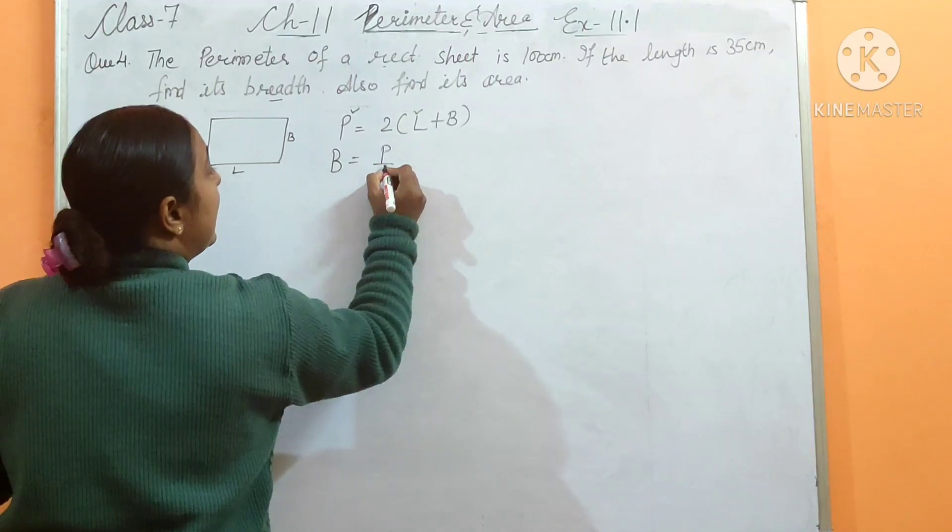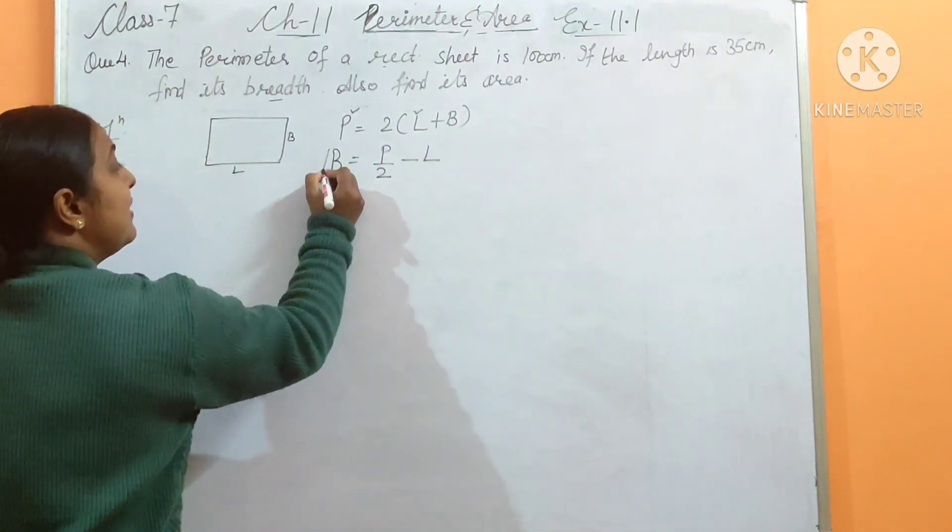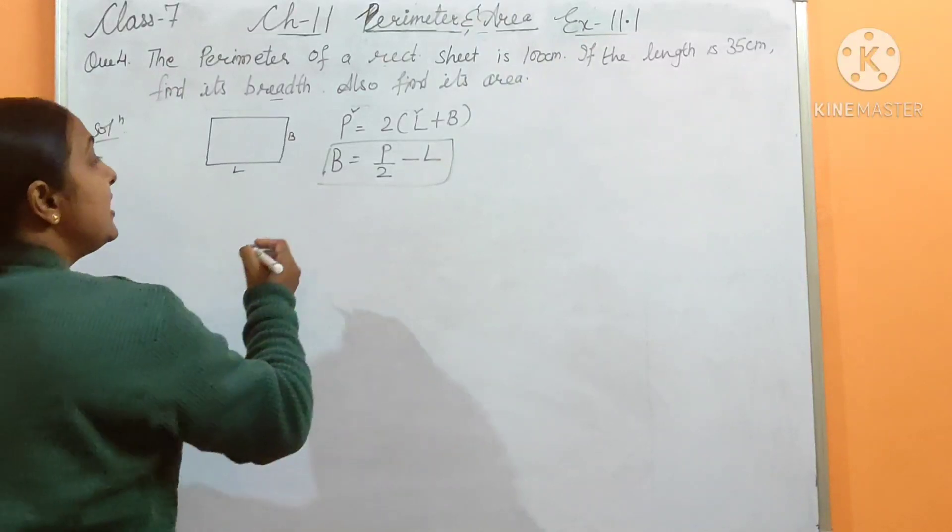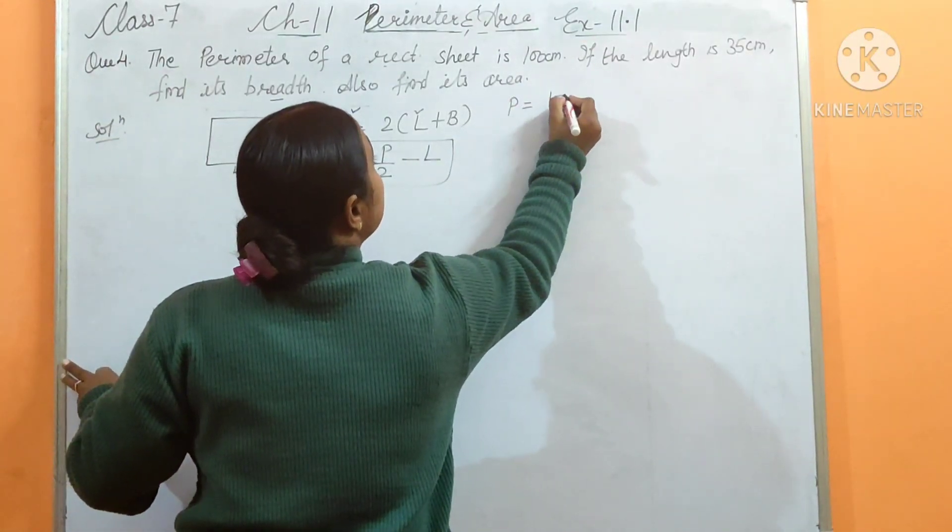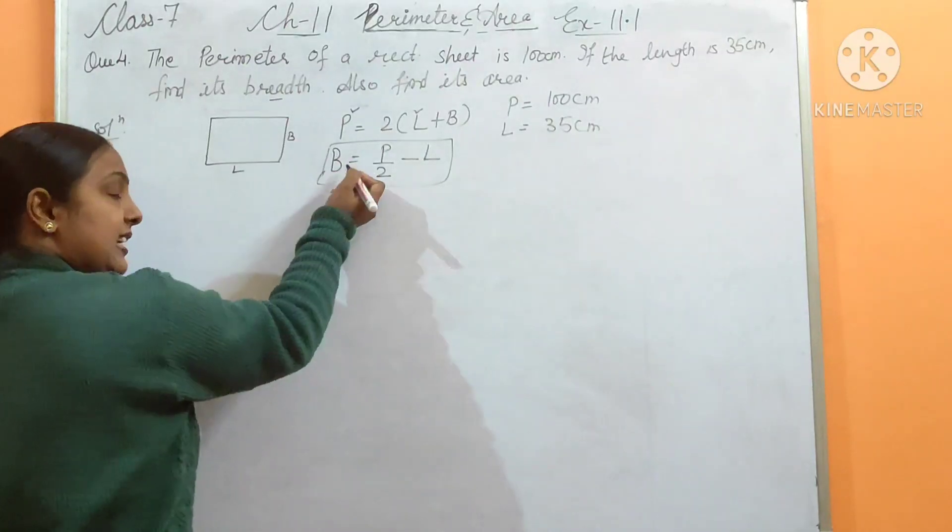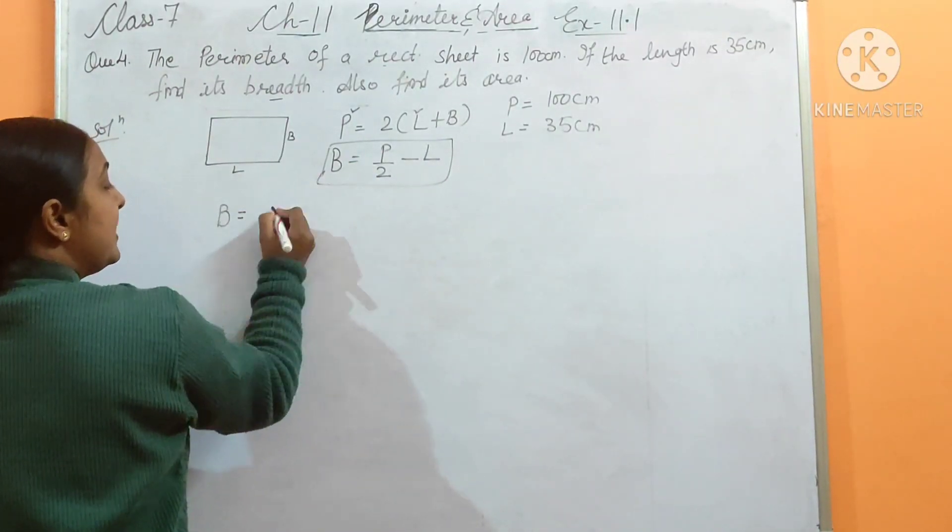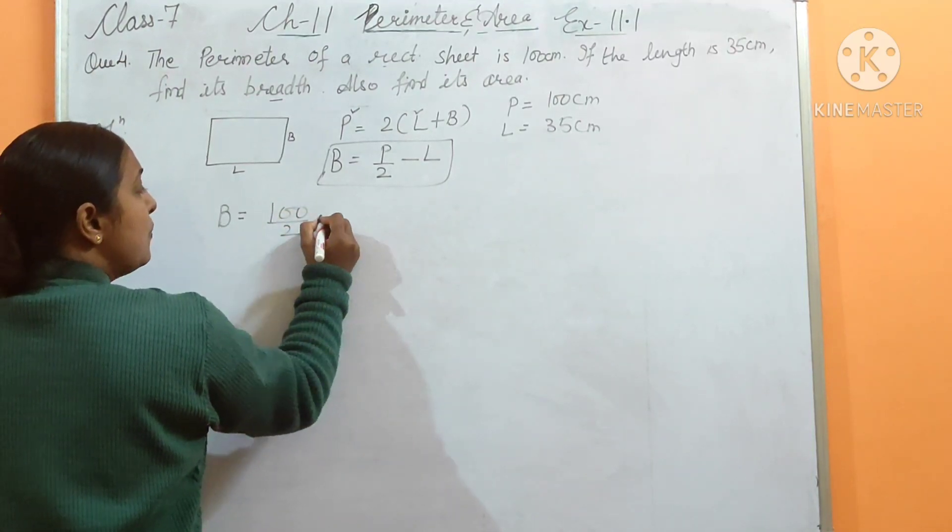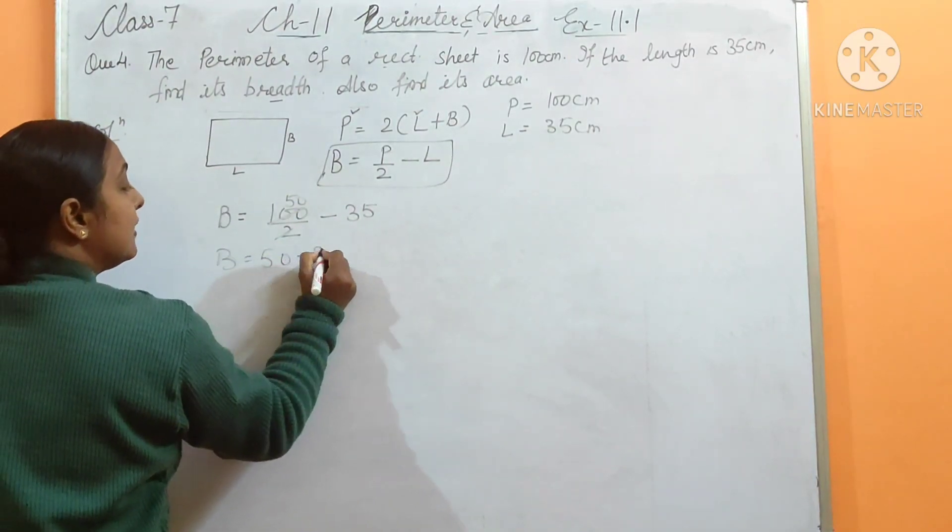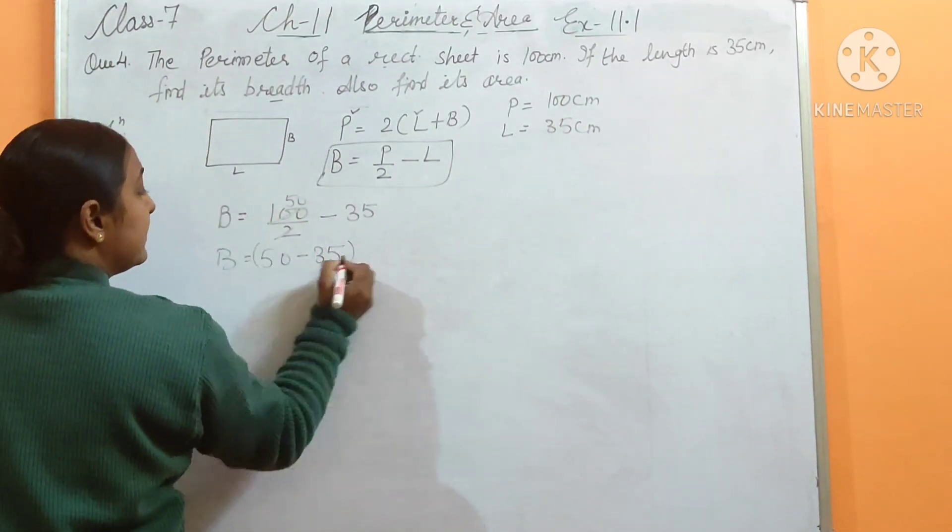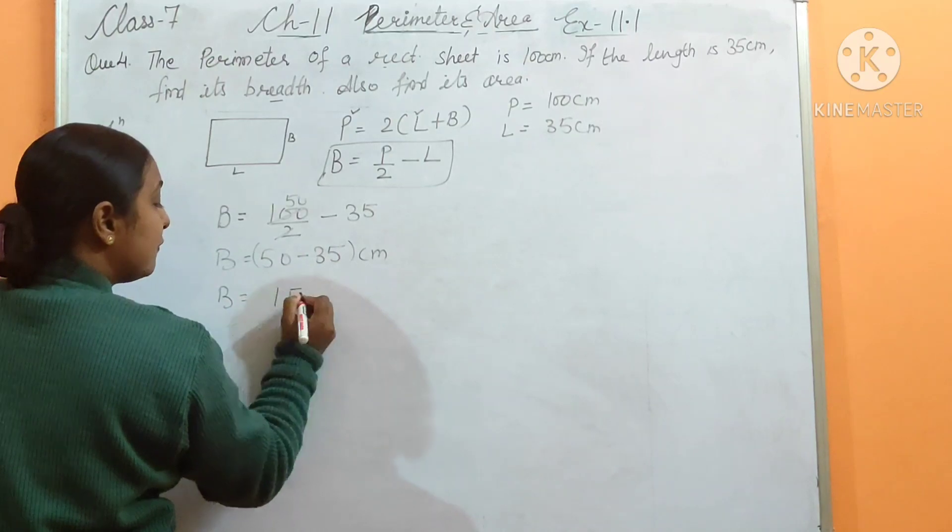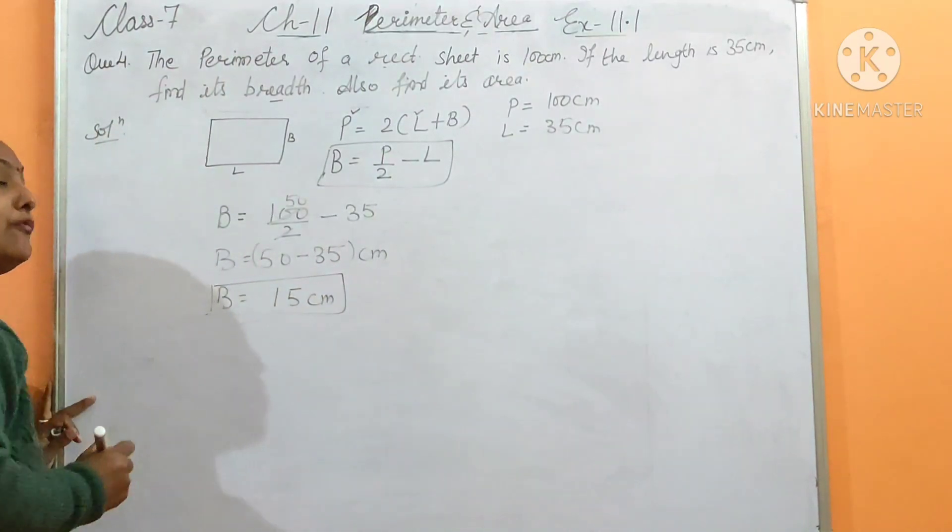Given is P equals 100 cm and L equals 35 cm. Put the values in this formula. B equals P by 2 minus L, so B equals 100 upon 2 minus 35. First divide: 100 divided by 2 is 50. So B equals 50 minus 35 in centimeters. 50 minus 35, that is 15 cm. The breadth is 15 cm.